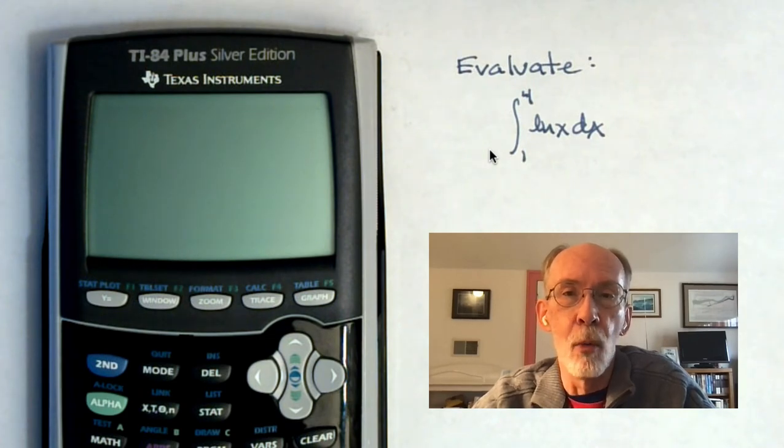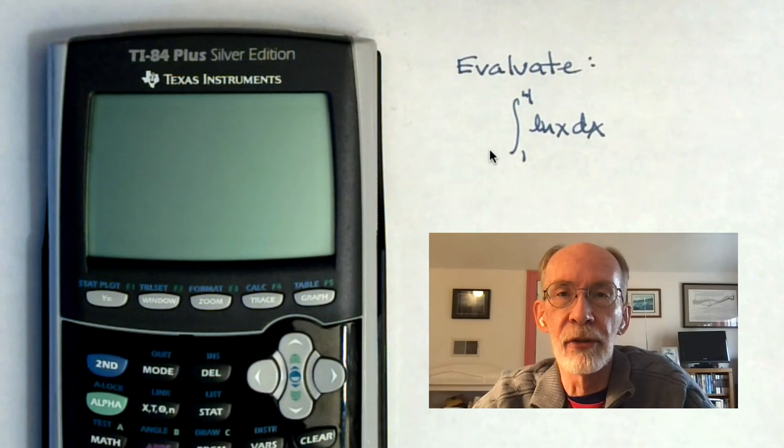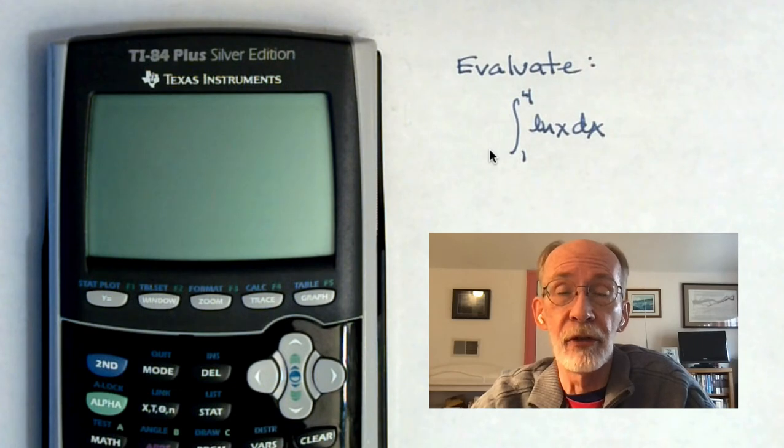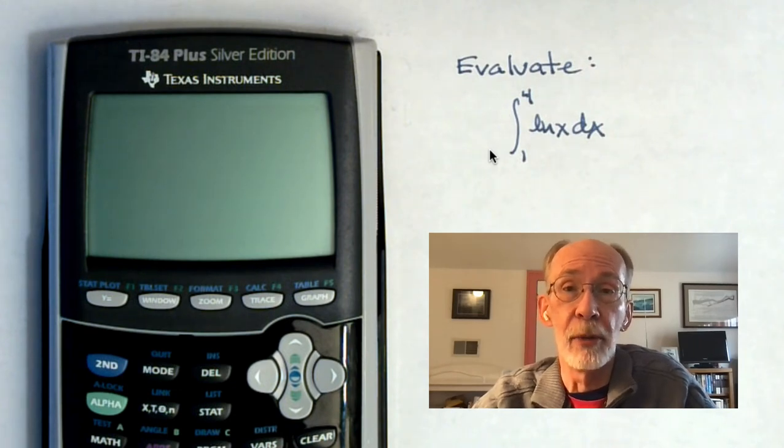You have to tell the program what function, what integrand you're integrating. You have to tell what the limits of integration are. You have to give the number of sub-intervals. And in the calculator, most programs will spit out a left, right, and midpoint Riemann sum. And some will also spit out a trapezoid or a Simpson's rule estimate if you're familiar with what those are.